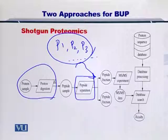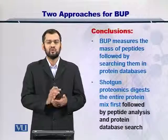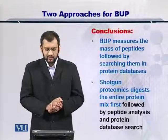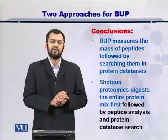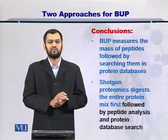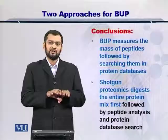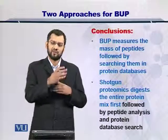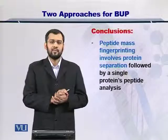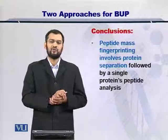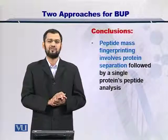Once you have obtained the peptides and measured them, you can search for the precursor protein in the sample. To conclude, the bottom-up proteomics method measures the peptides resulting from the precursor protein. There are two approaches: shotgun proteomics, which digests the entire protein mix into peptides measured by the mass spectrometer, and peptide mass fingerprinting, where you first separate the proteins and then digest each protein into its peptides for onward search using the sequence database.